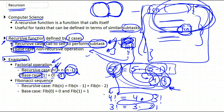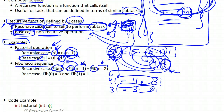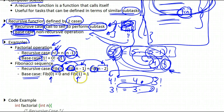Now what about the Fibonacci sequence? The Fibonacci sequence is defined as follows: we pass an integer n and want the Fibonacci of that number. The definition calls Fibonacci twice on smaller sub-tasks — Fibonacci of n minus 1, plus Fibonacci of n minus 2. So we are calling ourselves to define ourselves. The base cases are when n becomes 0 or 1: if n is 0, return 0; if n is 1, return 1. Then we work all the way back up until we get the Fibonacci result.